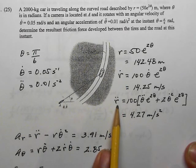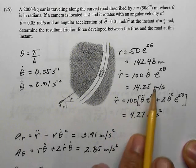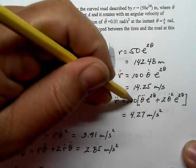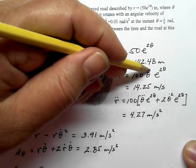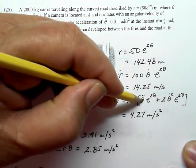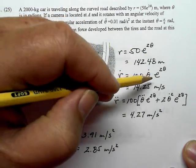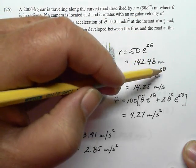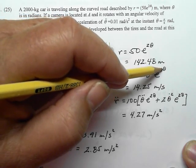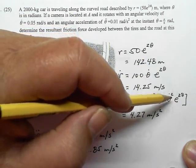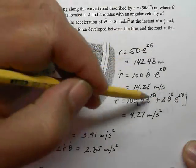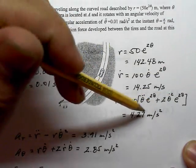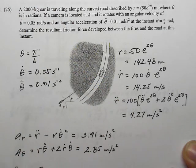Then we take the derivative of r-dot with respect to time to get r-double-dot. Since we have two terms involving θ that change with time — θ-dot and the 2θ in the exponent — we use the product rule. Leaving the 100 out, we get θ-double-dot × e^(2θ) from the first term, and then θ-dot × 2e^(2θ) × θ-dot from the second term via the chain rule. Plugging in all values gives r-double-dot = 4.27 meters per second squared.